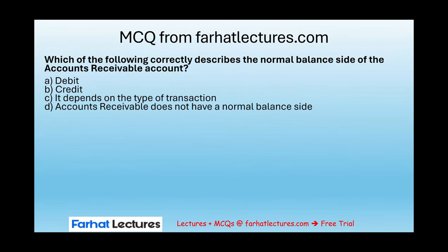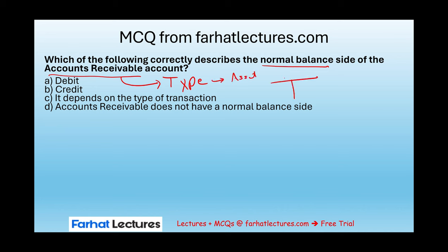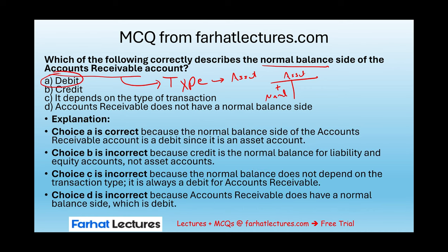Let's take a look at this multiple choice question from FarhatLectures.com: Which of the following correctly describes the normal balance of the accounts receivable account? First, I need to know what type of account accounts receivable is — because once you know the type, you know which side it increases on, and therefore whether the normal balance is debit or credit. Accounts receivable is an asset. Assets increase on the debit side. Therefore, the normal balance of accounts receivable is a debit balance.